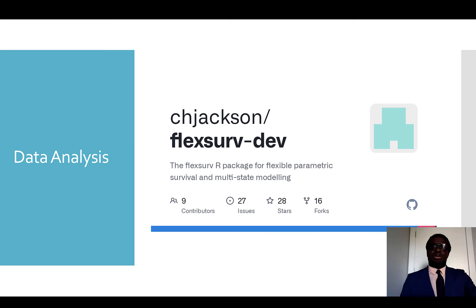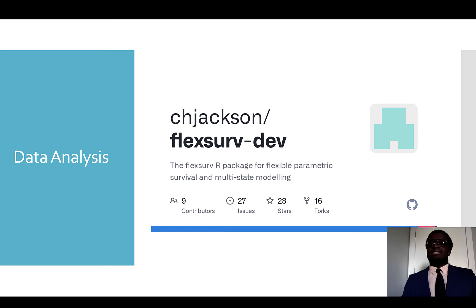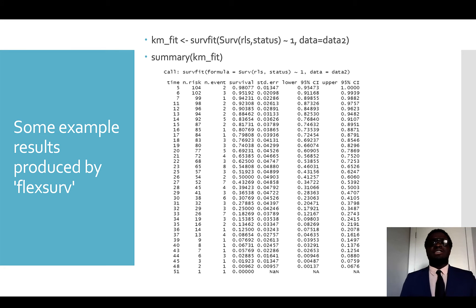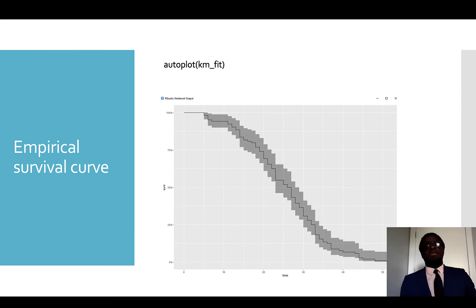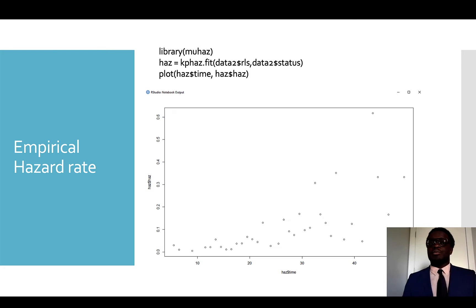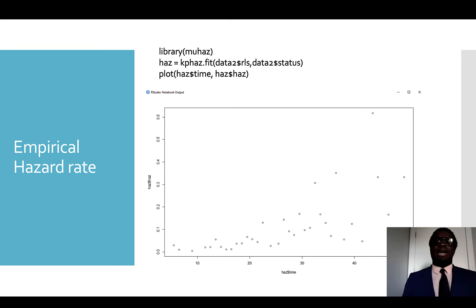FlexSurv is a library package in R containing statistical methods for survival analysis. This library is used for fitting the RLS data in the dataset to various parametric models used in our research analysis. Here, a variable KMFIT is being assigned to a statement in R that fits an instance using the FlexSurv package for the Kaplan-Meier method. The output below returns a computed estimate of a survival curve for the censored data. An autoplot of KMFIT returns a plot of the empirical survival curve of the censored data, as shown here. Using the muhaz library in FlexSurv, you can plot the hazard rate of the censored data.